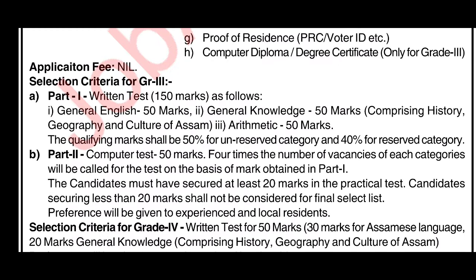The selection criteria for Grade 3 includes a written test of 150 marks: General English — 50 marks, General Knowledge comprising history, geography and culture — 50 marks, and Arithmetic — 50 marks. The qualifying marks will be 50% for unreserved category and 40% for reserved category.